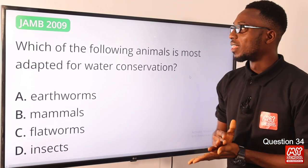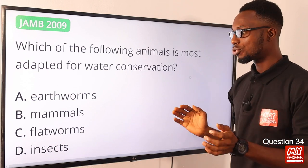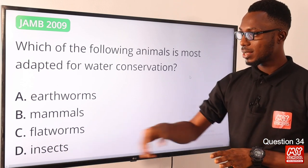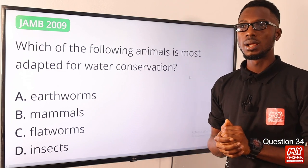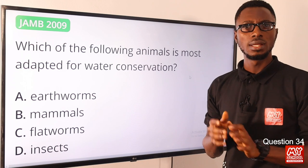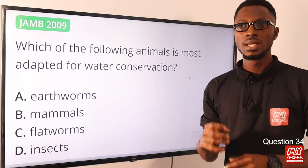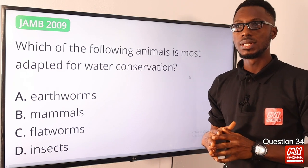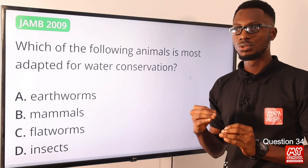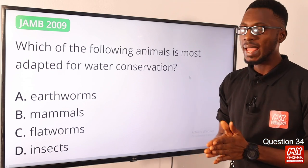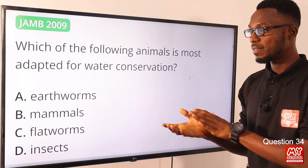Question 34: Which of the following animals is most adapted for water conservation? Insects are very efficient at water conservation due to their efficient excretory system — what they pass out is almost dry and solid. The outer surface of their body is waterproof due to a layer of wax, and they have spiracles to reduce water loss during gaseous exchange. That is why insects can be found in the hottest and driest places on earth. The correct option is option D for insects.